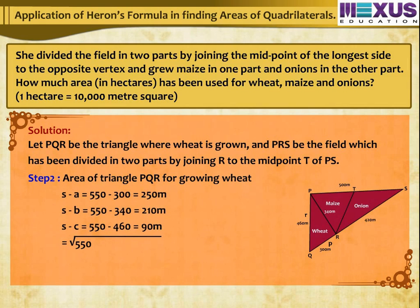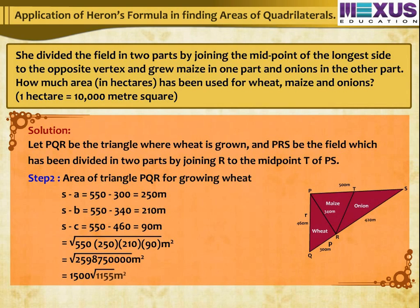Area of triangle PQR = √(550 × 250 × 210 × 90) = 1,500√(some value) ≈ 150√1,555 square meters, which equals approximately 0.1552 hectares.